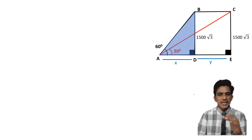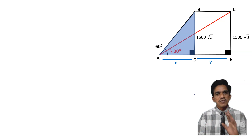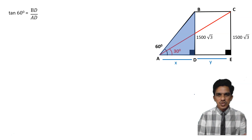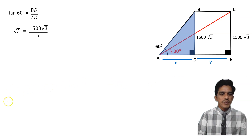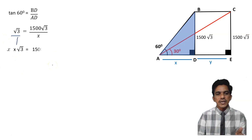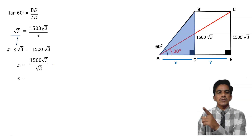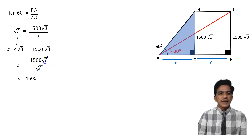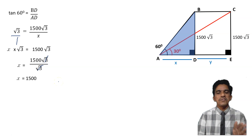Let us consider the first triangle ABD. The angle is 60 degrees, opposite side is 1500 root 3, adjacent side is X. Tan 60 equals BD by AD, so root 3 equals 1500 root 3 by X. Cross multiplying, X into root 3 equals 1500 root 3, so X equals 1500 root 3 by root 3, which means X equals 1500.